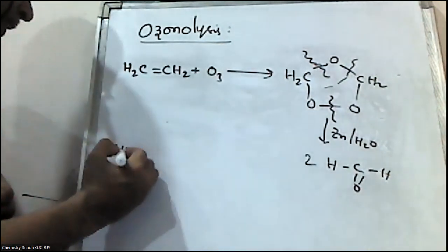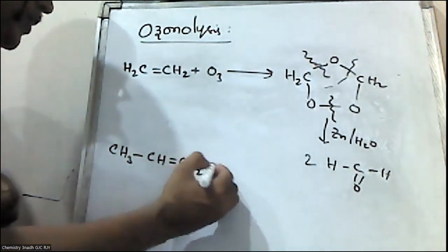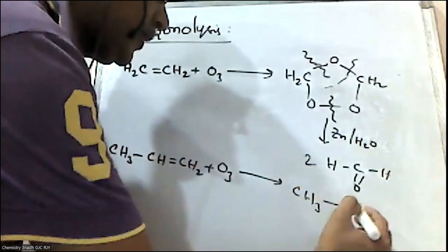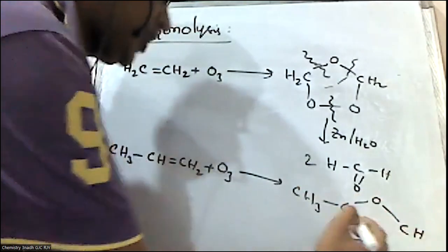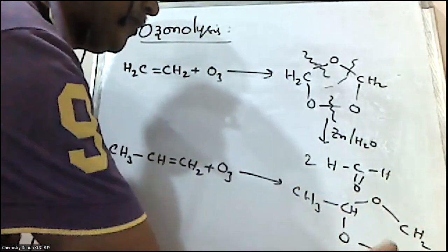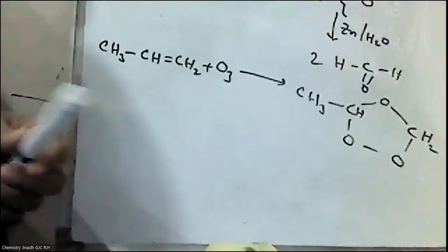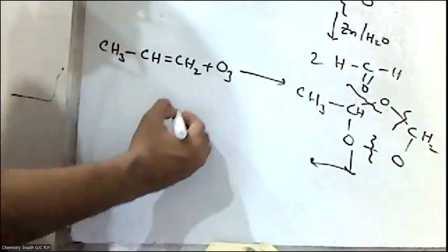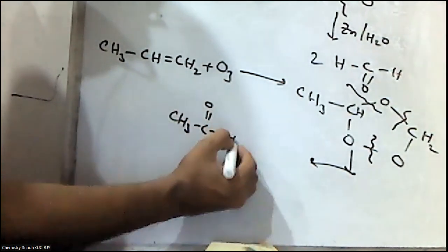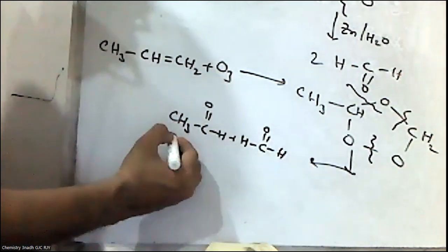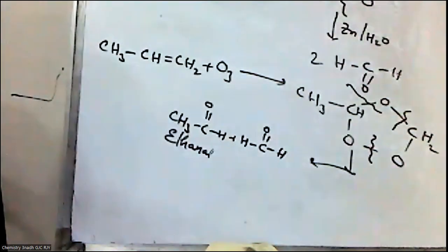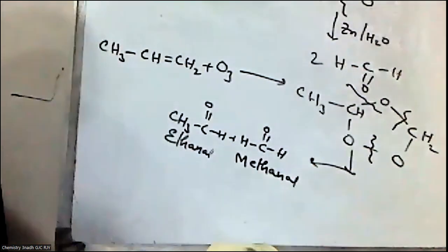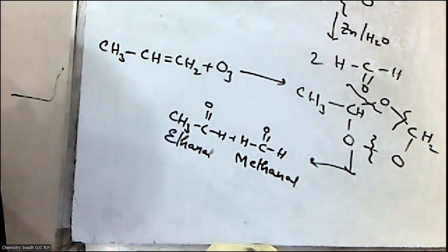Let me take another example. If you take propene, propene on reaction with ozone initially forms the ozonide — CH₃-CH=CH₂ — which on hydrolysis, the bond breaks. You will get one mole of ethanal and one mole of methanal (formaldehyde).